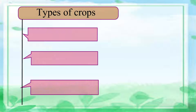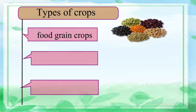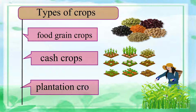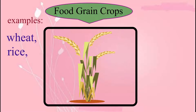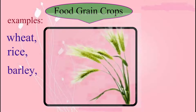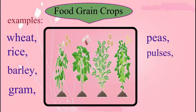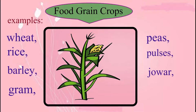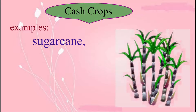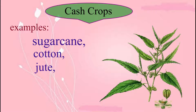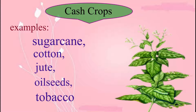The crops grown in our country are of three types basically: food grain crops, cash crops, and plantation crops. The examples of food grain crops are wheat, rice, barley, graham, peas, pulses, jowar, bajra, etc. The examples of cash crops are sugarcane, cotton, jute, oilseeds, tobacco, etc.